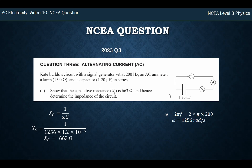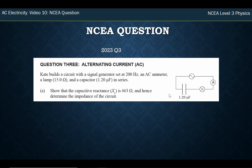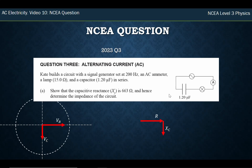Now determine the total impedance of the circuit. I'm just going to recall my phasor diagram first to get my head in the right space. R is always out to the right, and the capacitor lags — down there like that. That helps me to get my impedance triangle. The capacitive reactance points down, but I've put it tip to tail here so I can add them to find the total, which is what they're after.